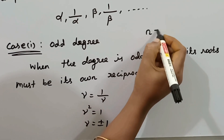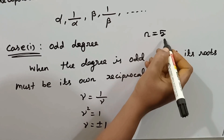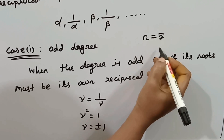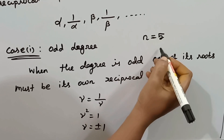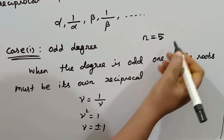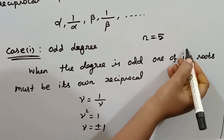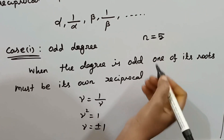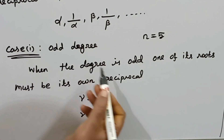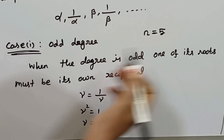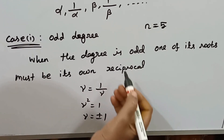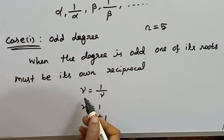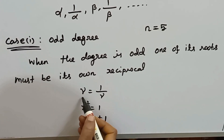For n equal to 5, a fifth degree equation has 5 roots. The first two roots and the next two roots form pairs — that is 4 roots exist as pairs. One root is single. When the degree is odd, one of its roots must be its own reciprocal. If the root is single, it equals its own reciprocal.